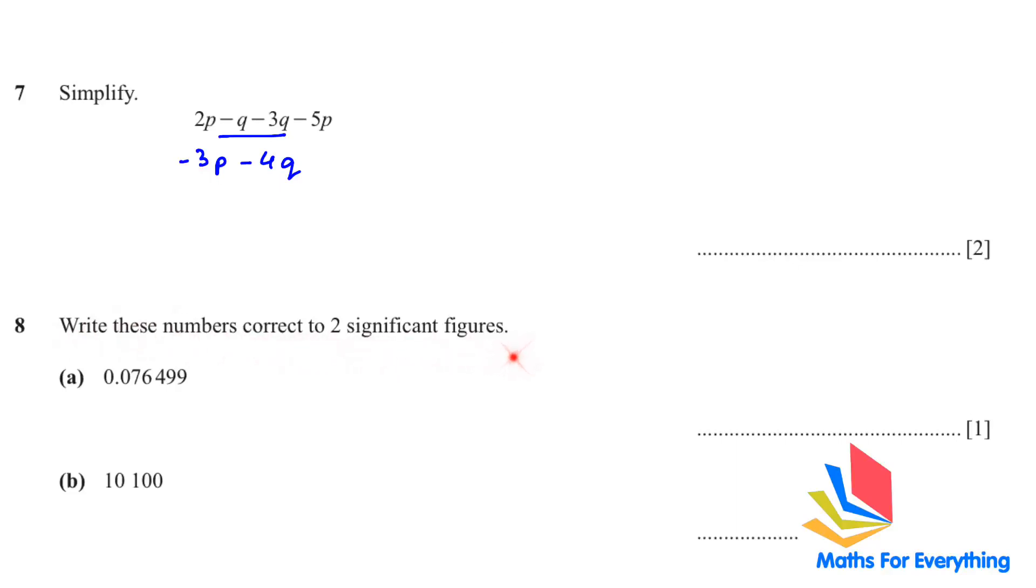Moving on to the next question. Write these numbers correct to two significant figures. So we have been given this number. Remember when you have a decimal and the first decimal or you have zeros before the first digit, you do not count that as a number. So your two significant figures are going to start from 7 is your first significant figure and 6 is the second. So it's going to be here. You have to round it to two significant figures. It will be 0.076. Next, 10,100. So second significant figure is your 0. It will be 10,000.